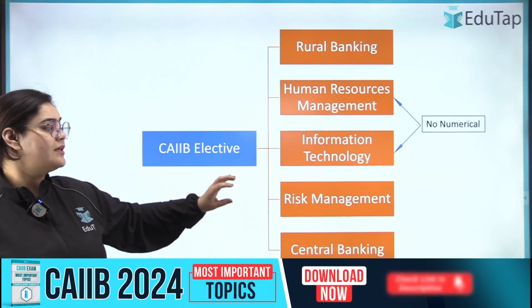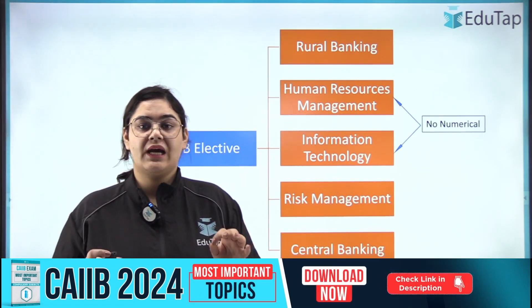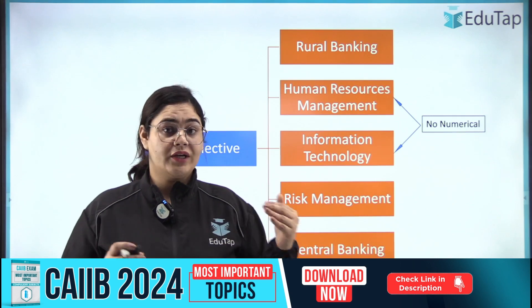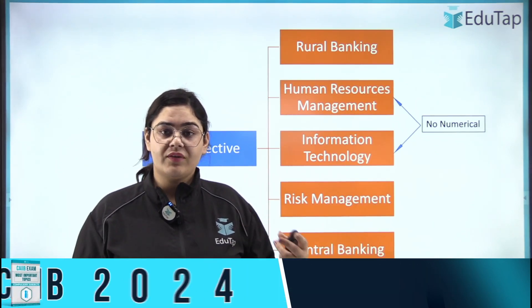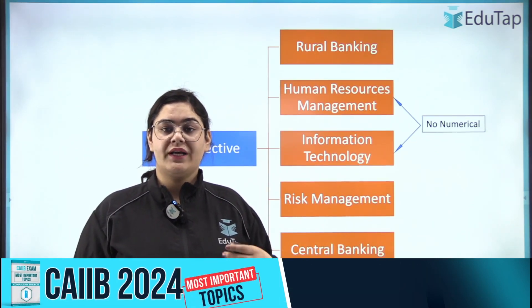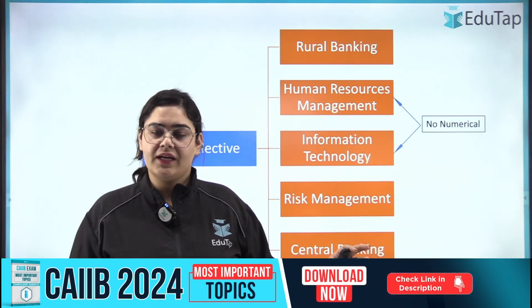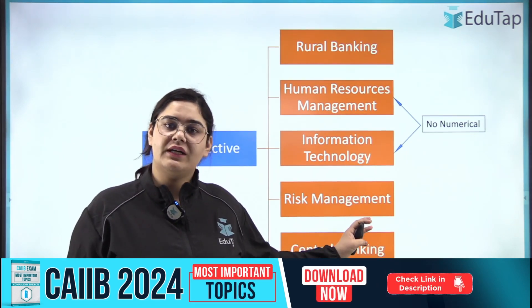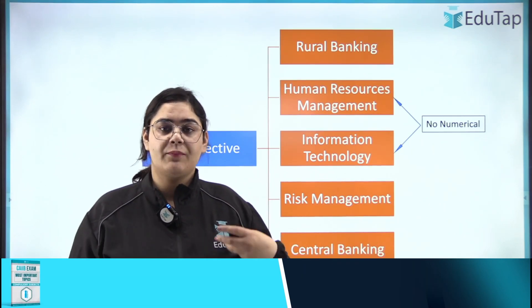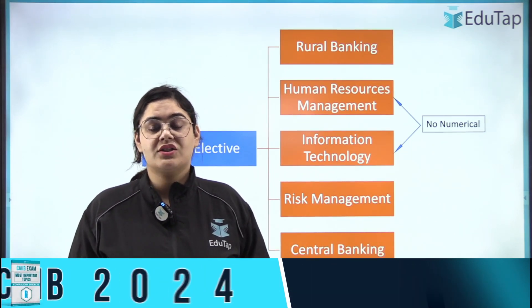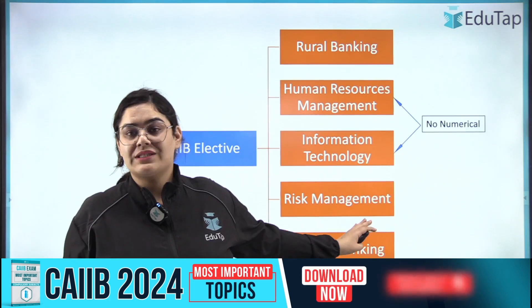Then there is Risk Management. Risk Management is an elective which I would tell you to avoid. It is a little difficult — there is a lot of BFM components and there are numericals. It will be difficult for you. However, if you are very good at numericals and BFM, you can choose it.